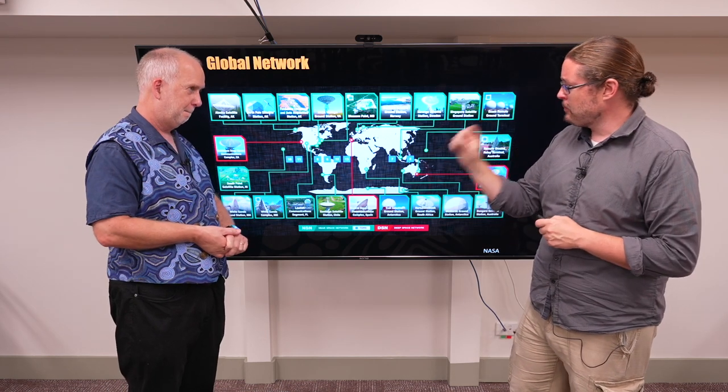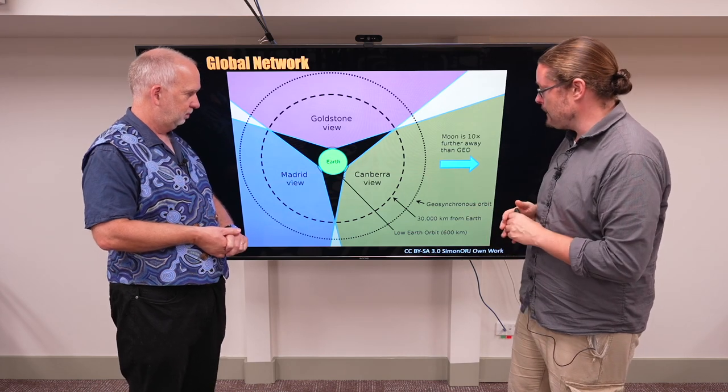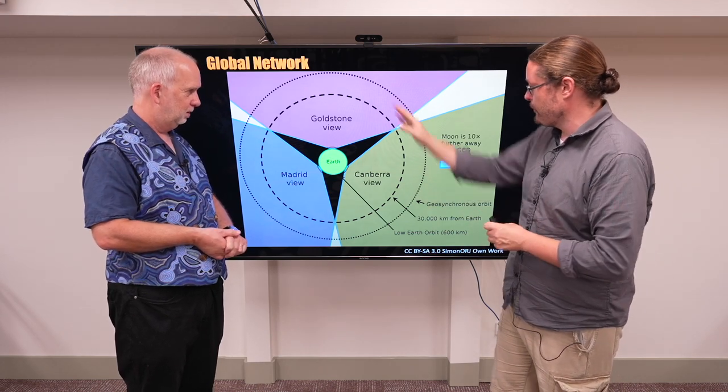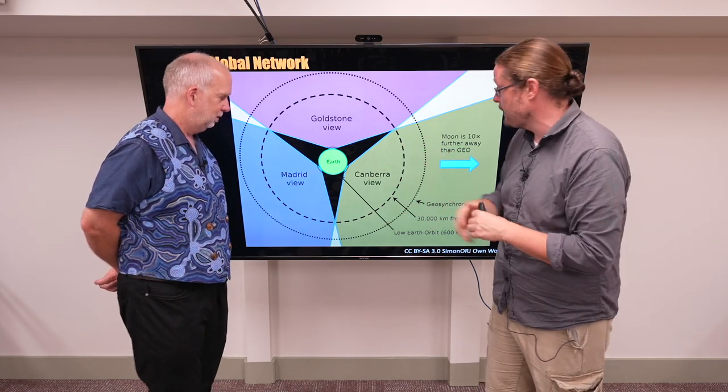Now you also said there was another important aspect and that is where the satellite is in space. And so, as we've kind of talked about earlier in the course, we have our low earth satellite. So those are where most of our satellites are, a couple of hundred kilometers, not that far away.